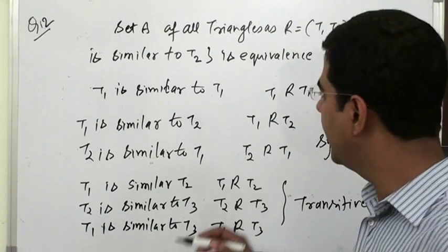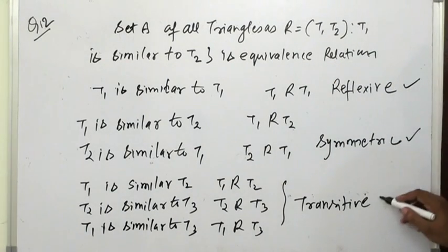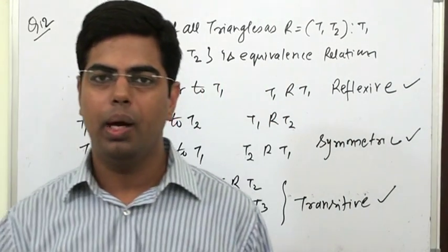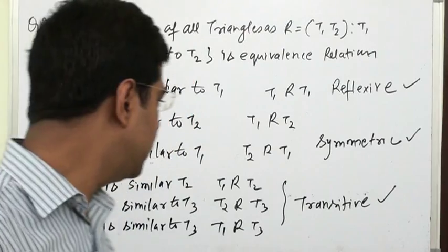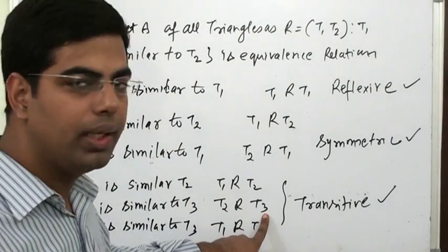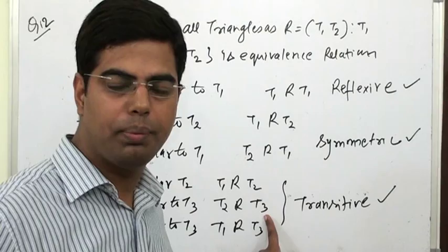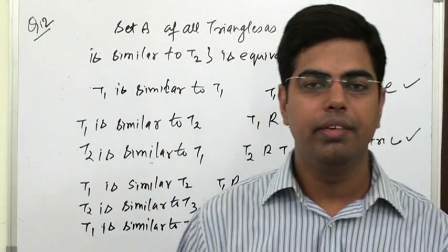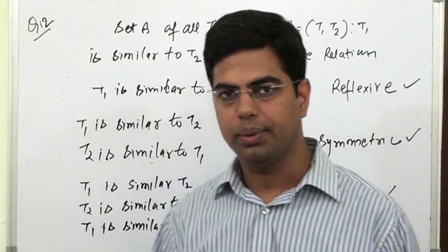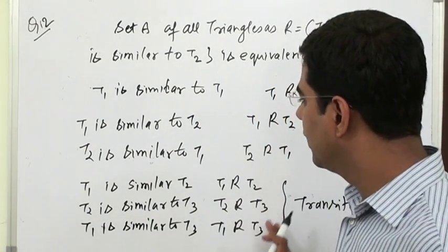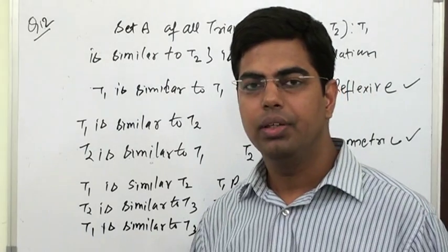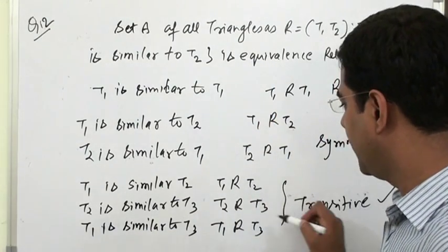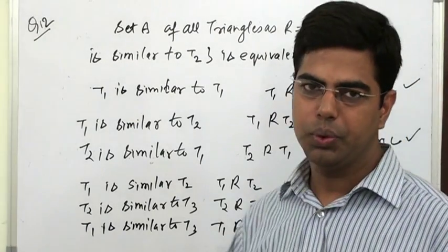तो अगर Reflexive भी है, Symmetric भी है, और Transitive भी है तो Relation Equivalence हो जाएगा। यहाँ पर T2 और T3 को assume करना पड़ता है जो T2 से relate करता है और बाद में T1 से relate हो जाता है। Transitive दिखाने के लिए हम एक condition assume कर लेते हैं और show कर लेते हैं।